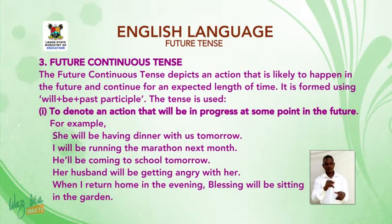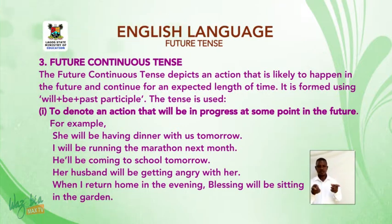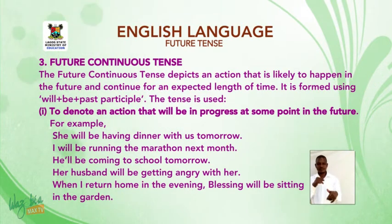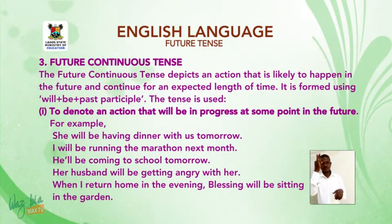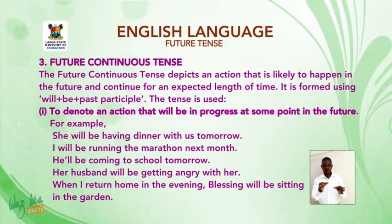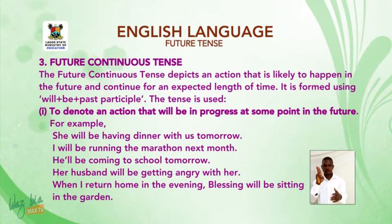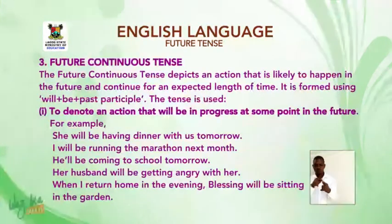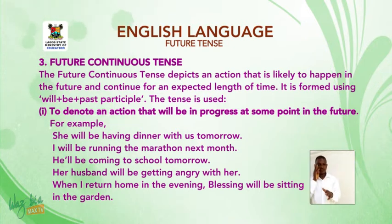The future continuous tense depicts an action that is likely to happen in the future and continue for an expected length of time. It is formed using WILL + BE + present participle. It is used to denote an action that will be in progress at some point in the future.